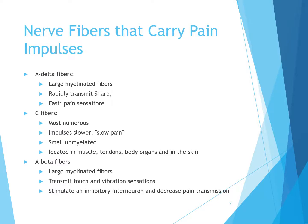Regarding nerve fibers that carry pain impulses: A-delta fibers are large myelinated fibers that rapidly transmit sharp pain — they are your fast pain sensations. Think of them like a burn or a pinprick that triggers a quick spinal withdrawal so you don't keep your hand in the fire. C fibers are the most numerous; their impulses are slower — they are small, unmyelinated, slow pain fibers.